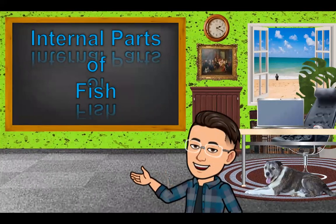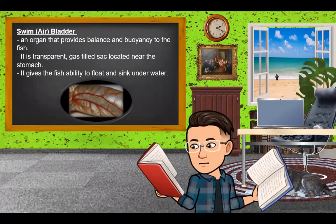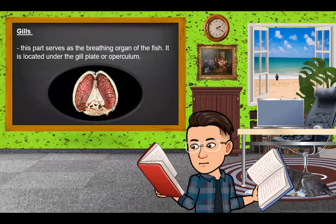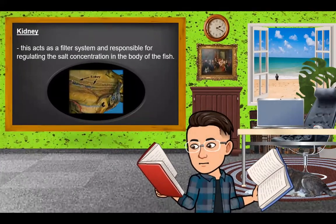The next subtopic is the internal parts of fish. One of the internal parts is the swim bladder, an organ that provides balance and buoyancy to the fish. It is a transparent, gas-filled sac located near the stomach, and it gives the fish the ability to float and sink underwater. Another internal part is the gills, which serve as the breathing organ of the fish, located under the gill plate or operculum. We also have the kidney, which acts as a filter system and is responsible for regulating the salt concentration in the body of the fish.